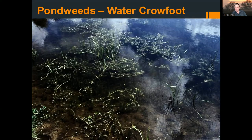Pond weeds are good indicators and water crowfoot can be quite complicated — there are various forms, some of which thrive in standing water, some in flowing rivers. The river water crowfoot has been reintroduced in rivers like the Don and Sheaf. We can look at these plants to assess water quality, and they also provide habitat for many other species. A site with clean water, plenty of water crowfoot and other pond weeds will be good habitat for dragonflies, damselflies, etc.